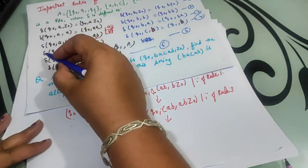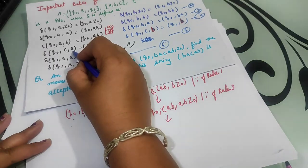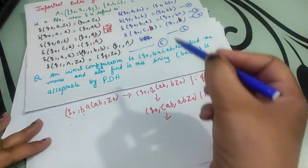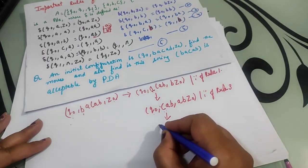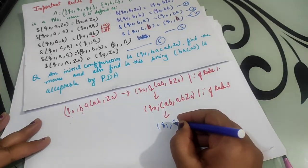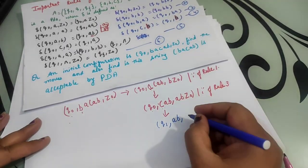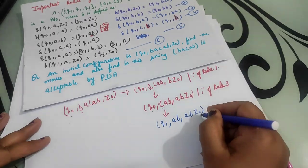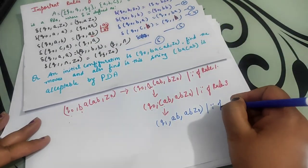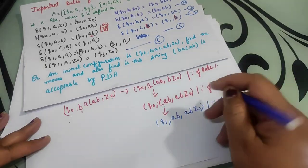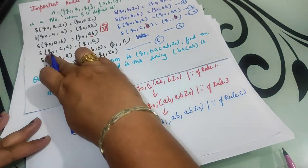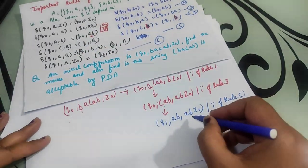Now at q0 state, 'c' is coming. The top of the stack has 'a'. So what do we do? At q0 state, when 'c' comes, change to q1 state and do not push anything — 'a' remains as it is. So here, nothing is inserted or removed. The stack still has 'ab' and z0. This is according to rule number 5. At q0 when 'c' comes, convert q0 state to q1 state and keep the stack as it is.